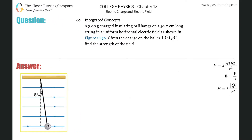Number 60, integrated concepts: a 5-gram charged insulating ball hangs on a 30-centimeter long string in a uniform horizontal electric field as shown in the figure. Given the charge on the ball is one micro coulomb, find the strength of the field. Here's a little picture, and what we realize is that this ball is basically in equilibrium.